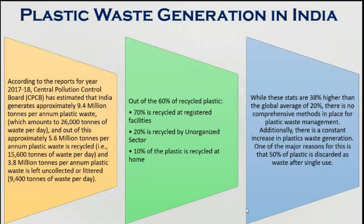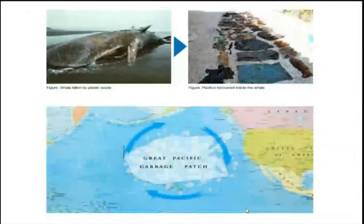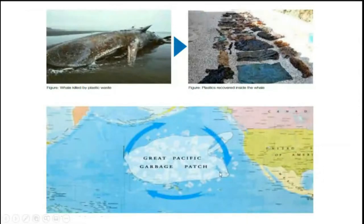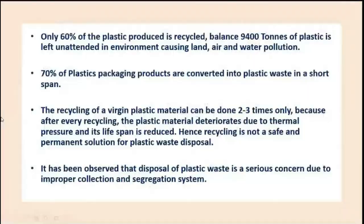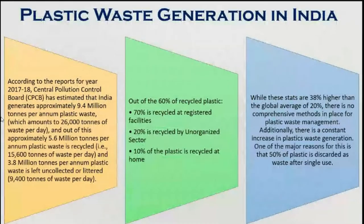The Great Pacific Garbage Patch shows how much plastic has been recovered from the ocean surface — a very grave situation where animals consume plastic thinking it is food, but it is not digested and they die of hunger. According to reports by the Pollution Control Board for 2017–18, India generated around 9.4 million tons of plastic waste per annum.